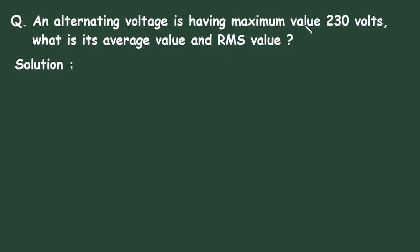So here the value of Vm is given, that is maximum voltage. It is equal to 230 volts and we have to find its average value, Vavg, and also its RMS value, VRMS.